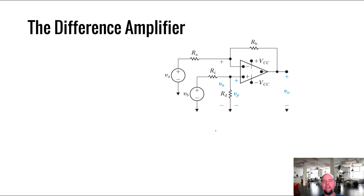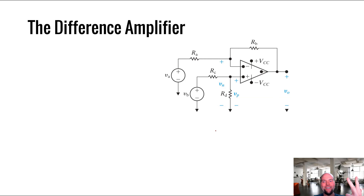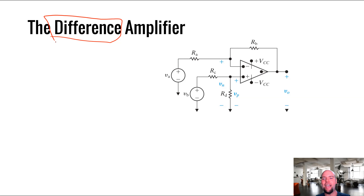Let's do one more example - this will be the last op amp circuit analysis in Chapter 5. So far we've done multiplying by a negative number, addition, and multiplying by a positive number. What's left? Subtraction. We'd really like to be able to do subtraction. You can also do integrals and derivatives very easily with op amps - all you need is a capacitor - but that's beyond this class. The next circuit is the difference amplifier, and this is by far the ugliest math of all the analysis we've done. But it's a process - let's jump right into it.